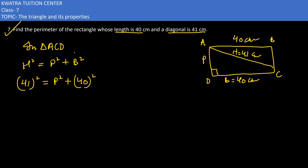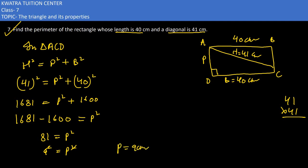So 41² is nothing but 1681. This equals p² plus 40², which is 1600. So 1681 minus 1600 equals p². You would get 81 equals p². The perpendicular in this case is 9 cm.